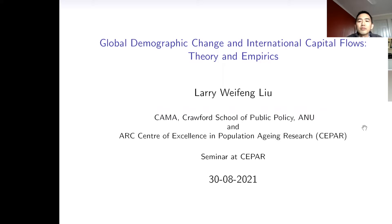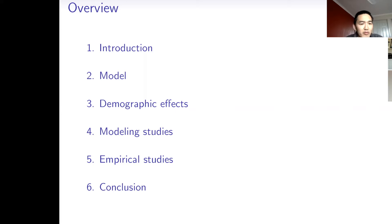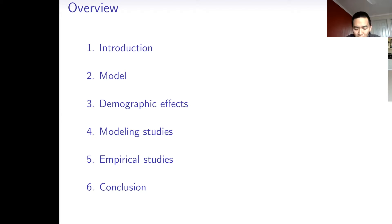Here's my plan for this talk. First I will talk about why I am interested in the international dimension of population aging. Then I will introduce my model, and in a small economy, based on the model, I will look at the demographic effects on capital flows. This will serve as the benchmark results when I do the literature review. I divide the literature into two parts: model-based studies and empirical studies. Given this paper covers a lot of contents, I will skip many details in the presentation due to time constraint, but I will focus on the big picture. Feel free to interrupt if you have any questions.